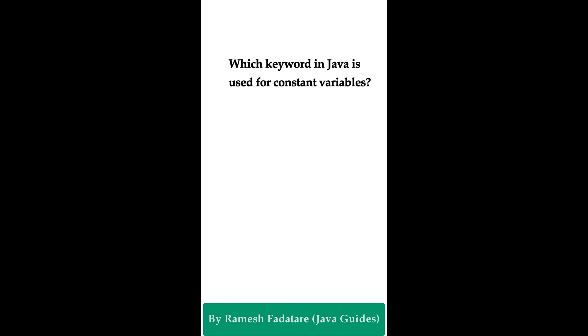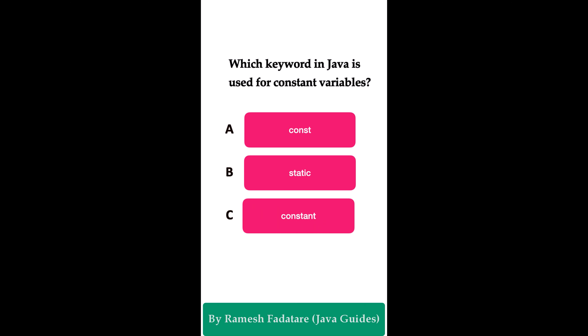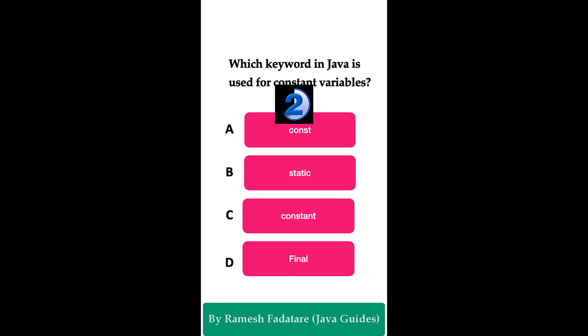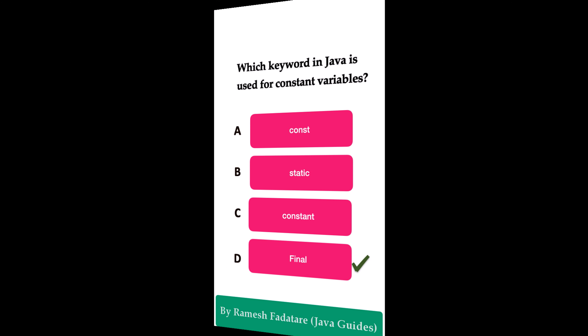Which keyword in Java is used for constant variables? Option A: const. Option B: static. Option C: constant. Option D: final. The correct answer is final. In Java, the final keyword is used to declare a constant variable. Once a variable is declared with final, its value cannot be modified, effectively making it a constant. We can use the final keyword to ensure that a variable's value cannot be modified or reassigned.